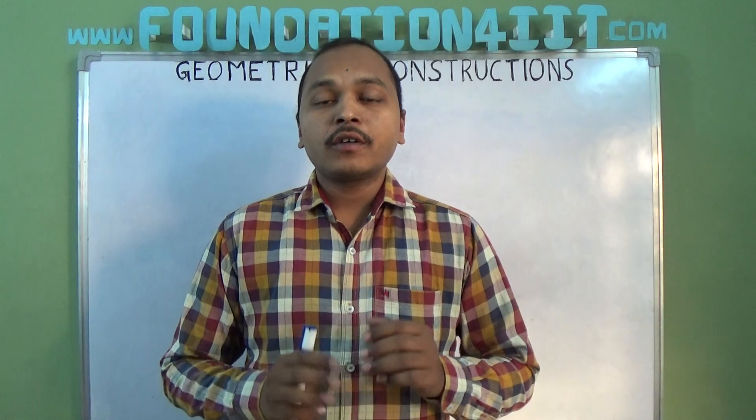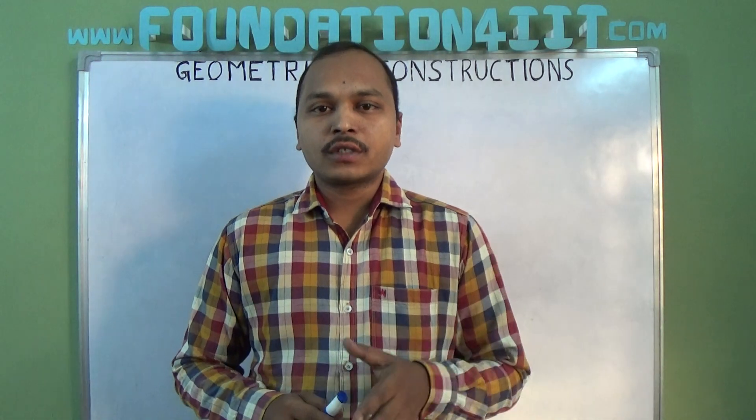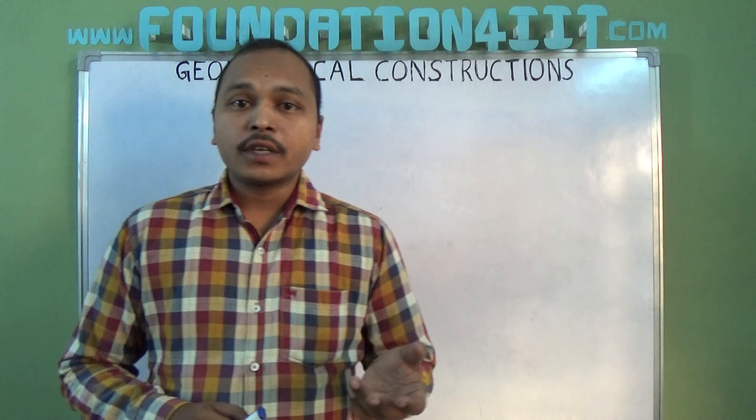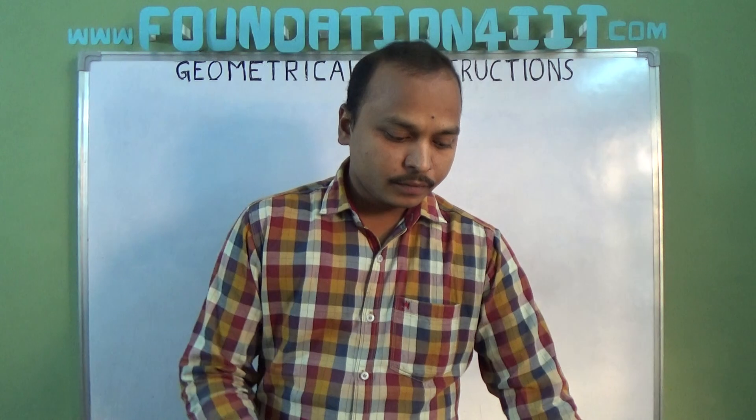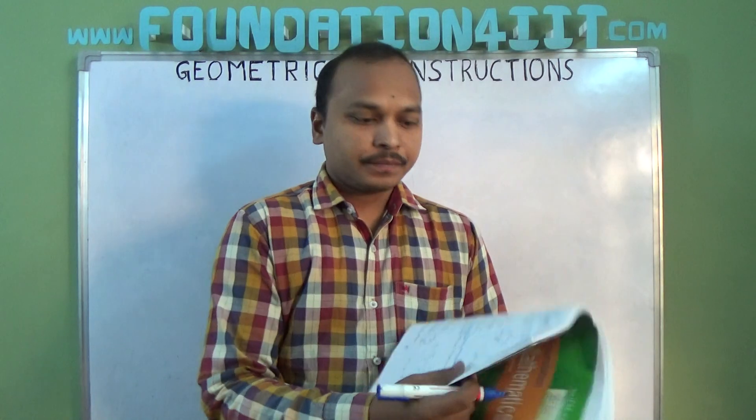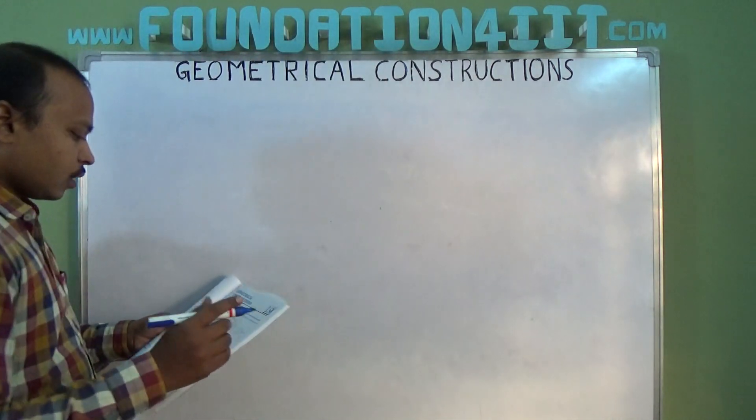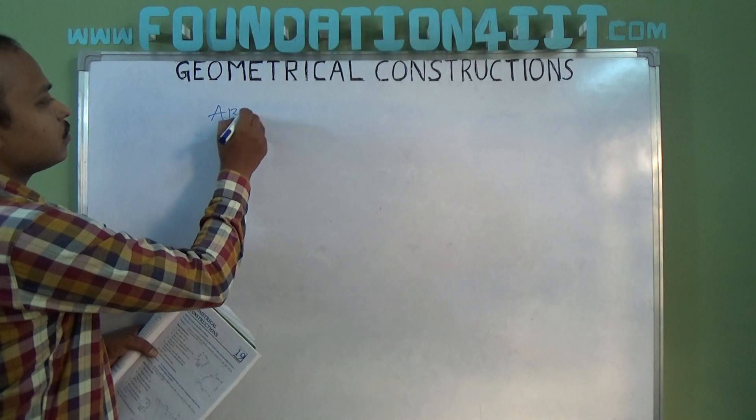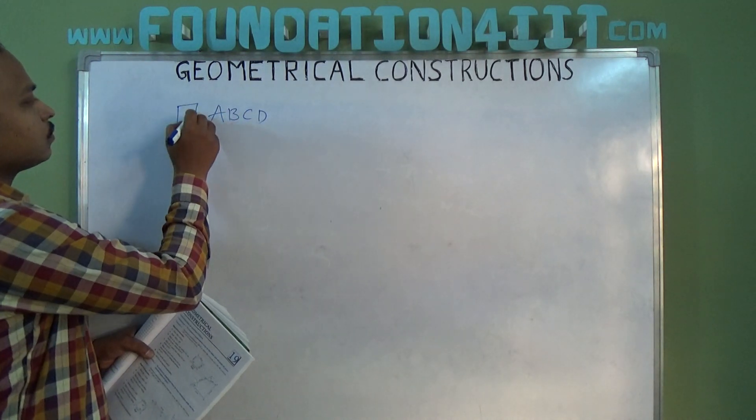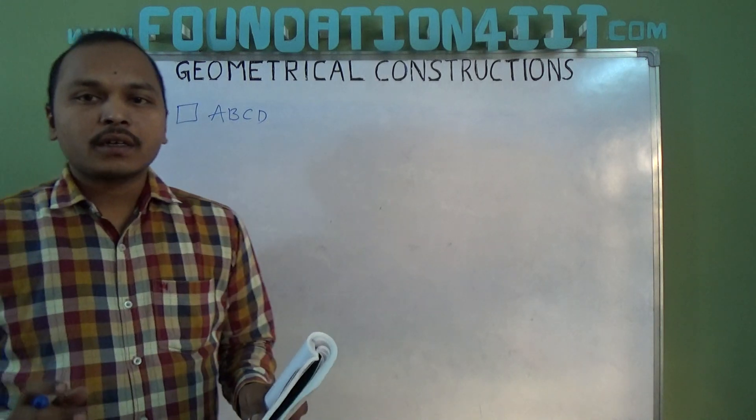Either four sides and one angle, or three sides and two angles. This video is about four sides and one angle given. The question is: construct a quadrilateral ABCD.